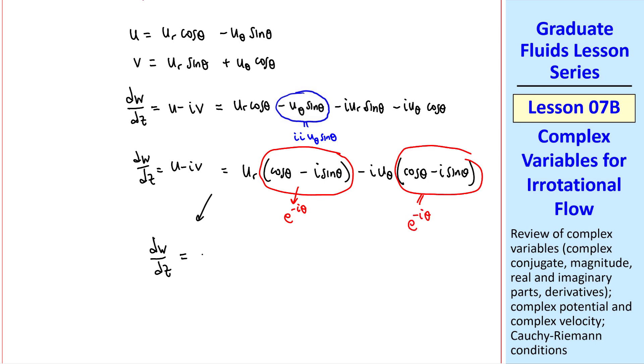Thus, the complex velocity is either u minus iv or ur minus i u theta, e to the minus i theta. Again, we'll work with either Cartesian coordinates or cylindrical coordinates. And sometimes both, depending on the problem at hand.